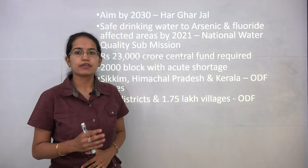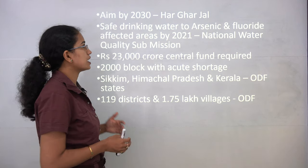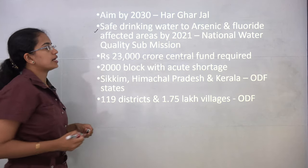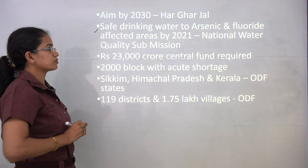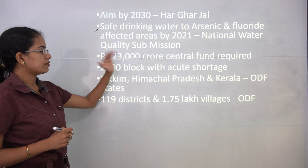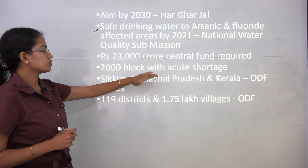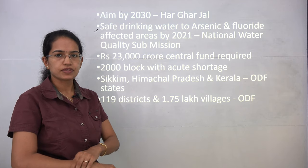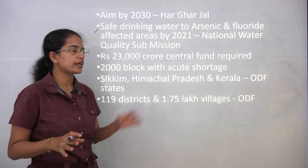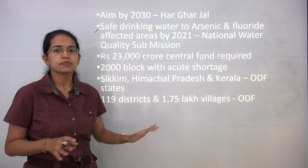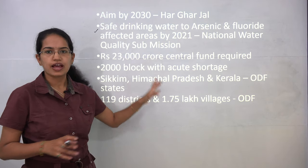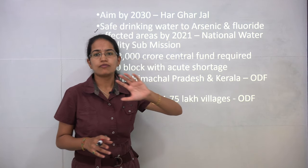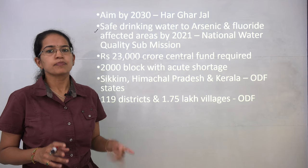The mission by 2030 is providing water to every household under the Har Ghar Jal scheme. Safe drinking water to arsenic and fluoride affected areas is targeted by 2021. For updated data on these schemes, you can refer to the current affairs section. The next topic is ODF — open defecation free — states. Three states have already been declared ODF: Sikkim, Himachal Pradesh, and Kerala.